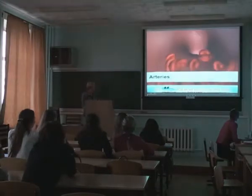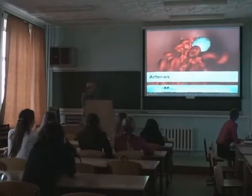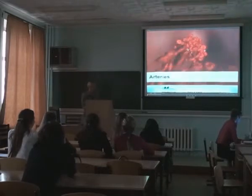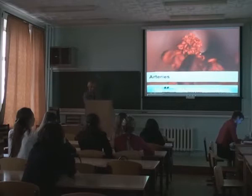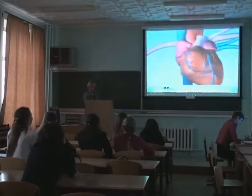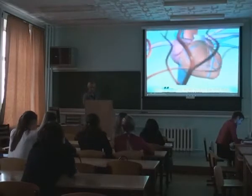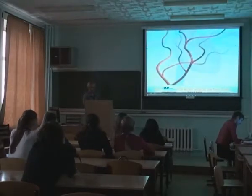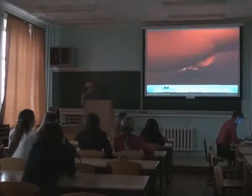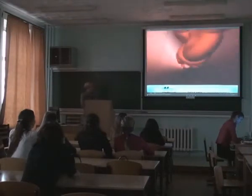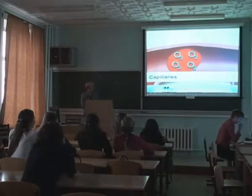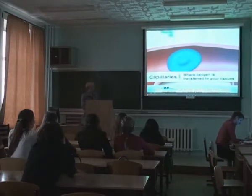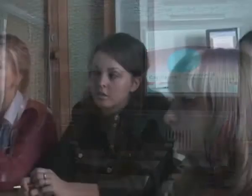Arteries are large blood vessels that carry blood from your heart to the rest of your body. This blood is rich in oxygen and nutrients. As arteries get farther away from the heart, they begin to branch and become smaller and smaller. The smallest branches are called capillaries, and this is where the oxygen in your blood is transferred to your tissue.